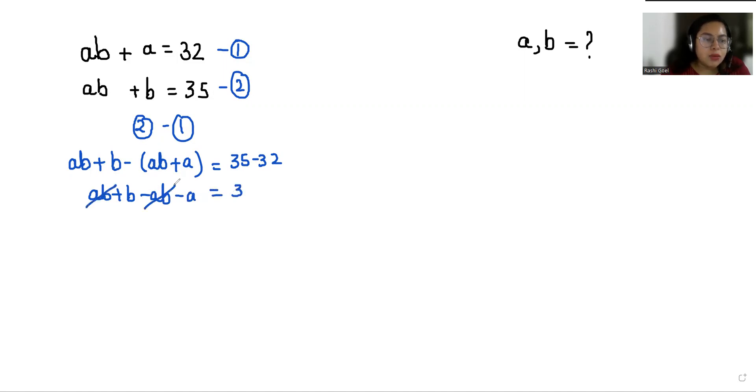We can cancel out this positive AB with negative AB. So B minus A equals 3, and B equals 3 plus A.